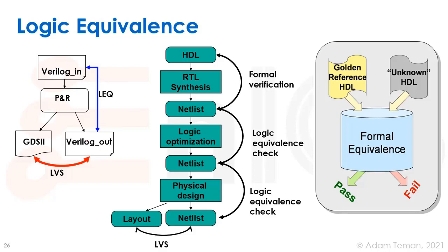We have to run Logic Equivalence Checking, or LEC, between them. That's a formal verification check where we make sure the Boolean functionality of the RTL and the Boolean functionality of the gate-level netlist are exactly the same. We discussed a little bit with BDDs how this can be done. Tools that do this include Cadence Conformal and Synopsys Formality. It's actually pretty hard because a lot changes between the original RTL and the final netlist.